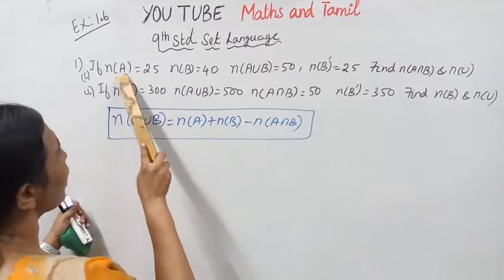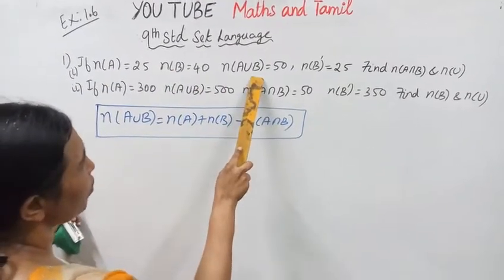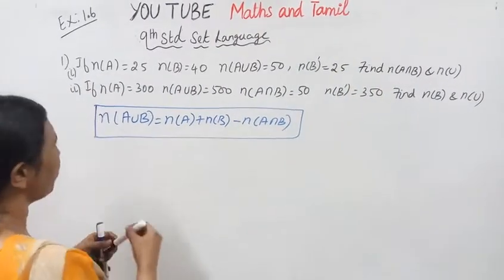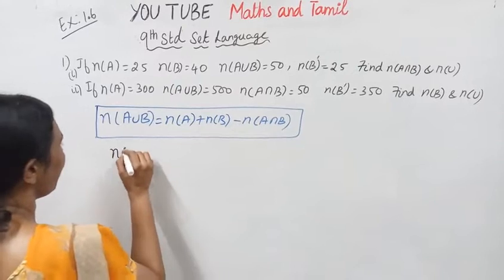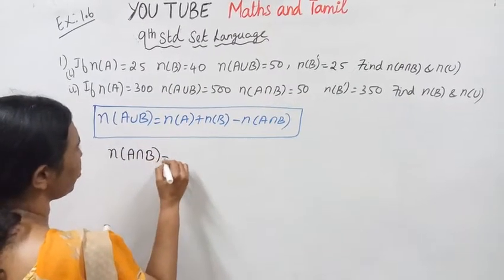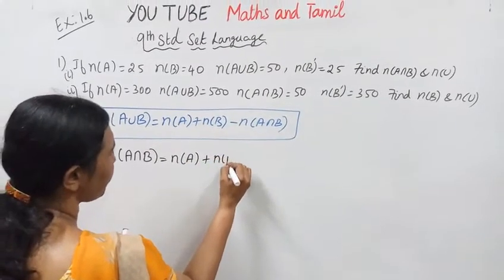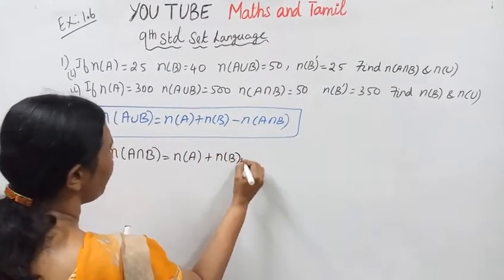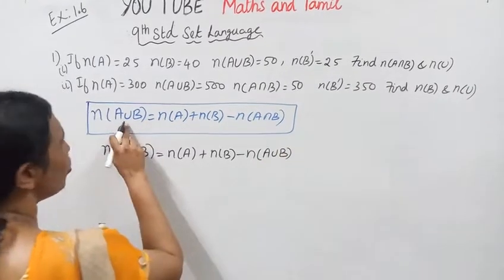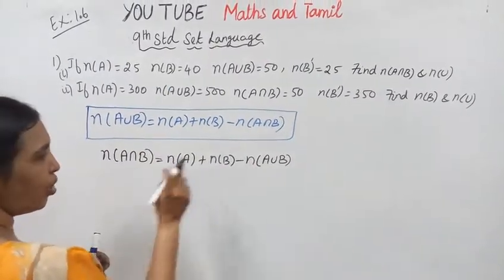Now we can get this. We have N of A, N of B, and N of A union B. So we can find N of A intersection B equal to N of A plus N of B minus N of A union B.